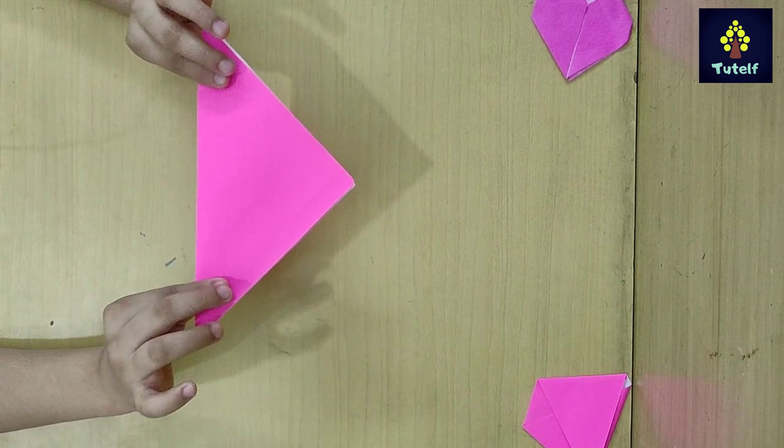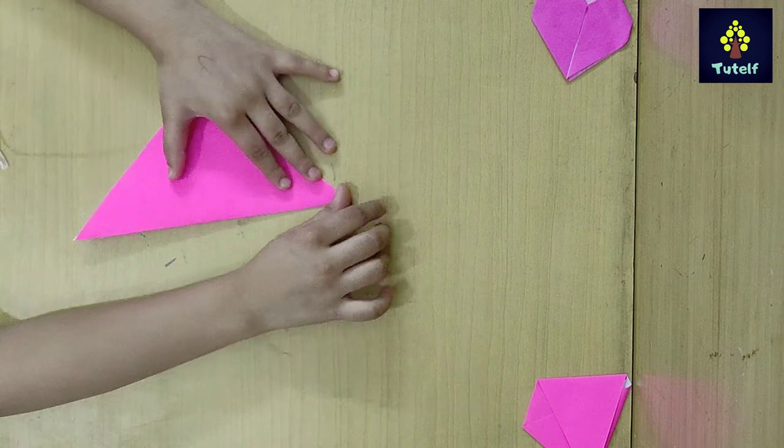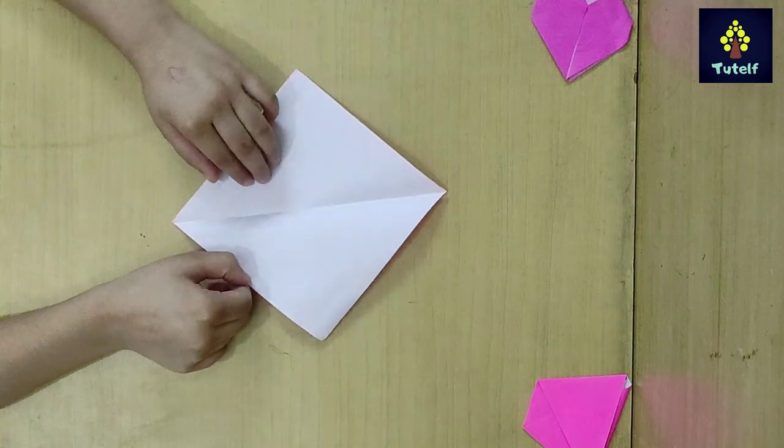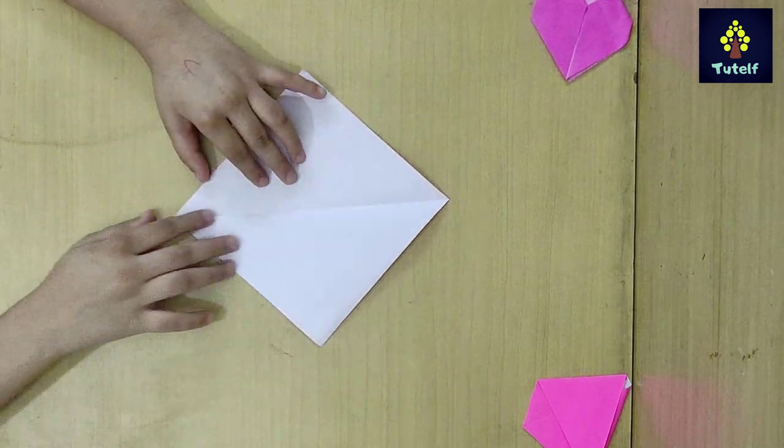Fold it diagonally. Now we will sharpen it with the nail and open it. Then we have a line.